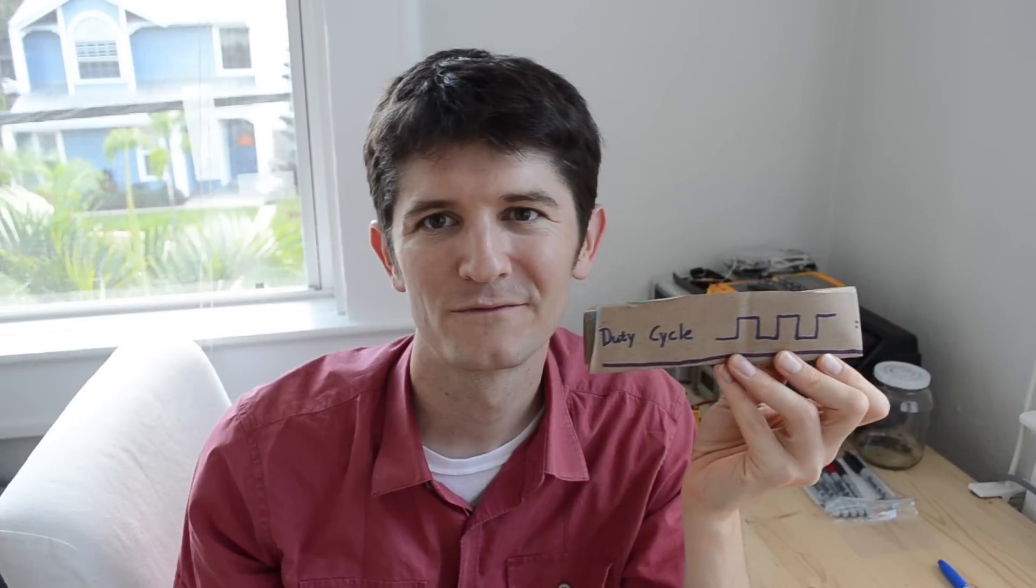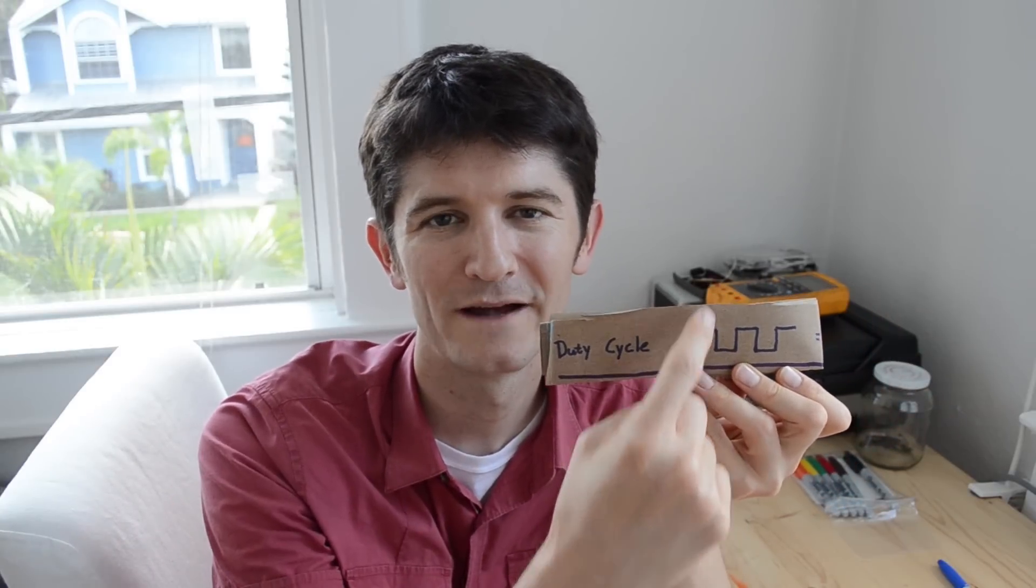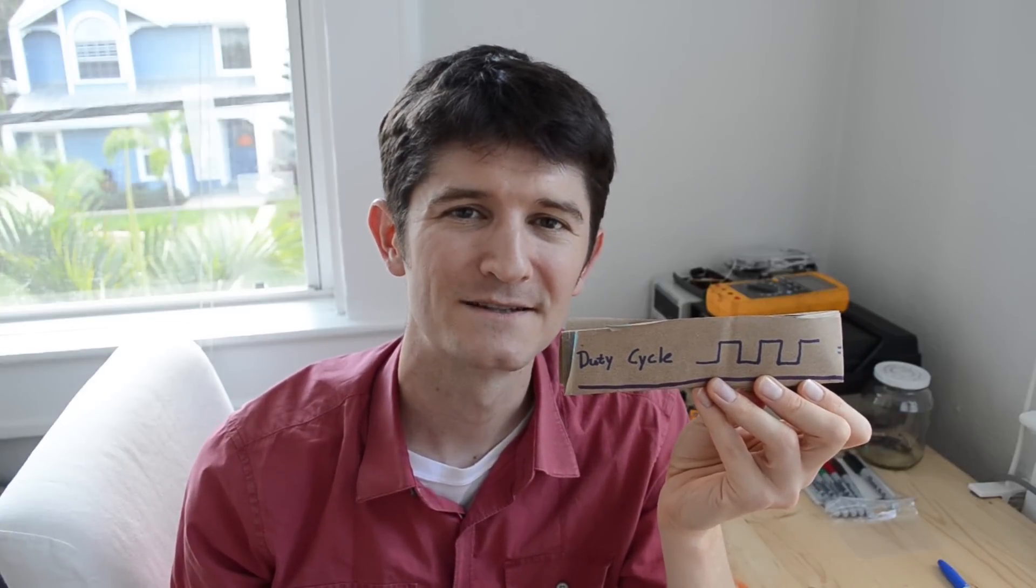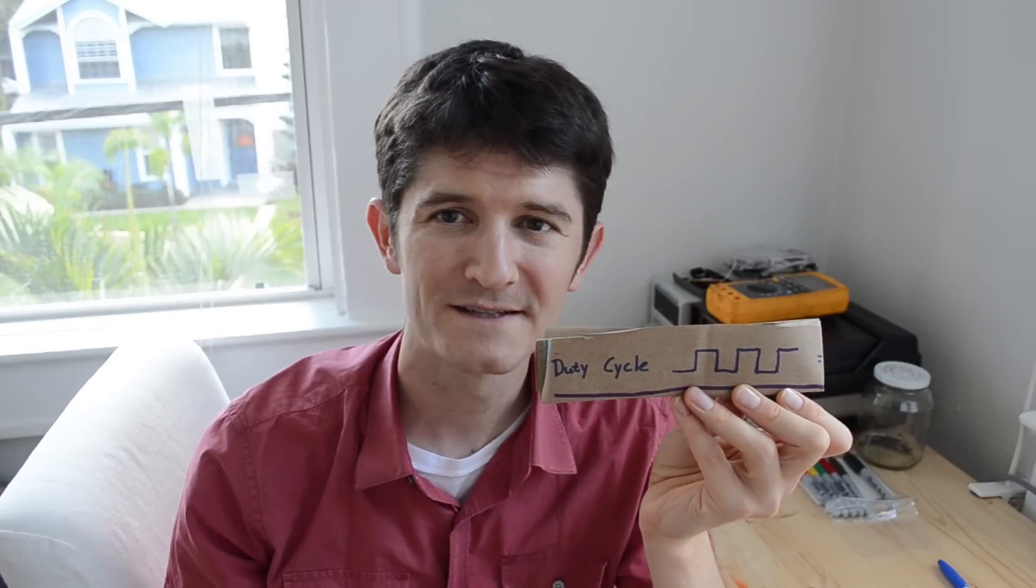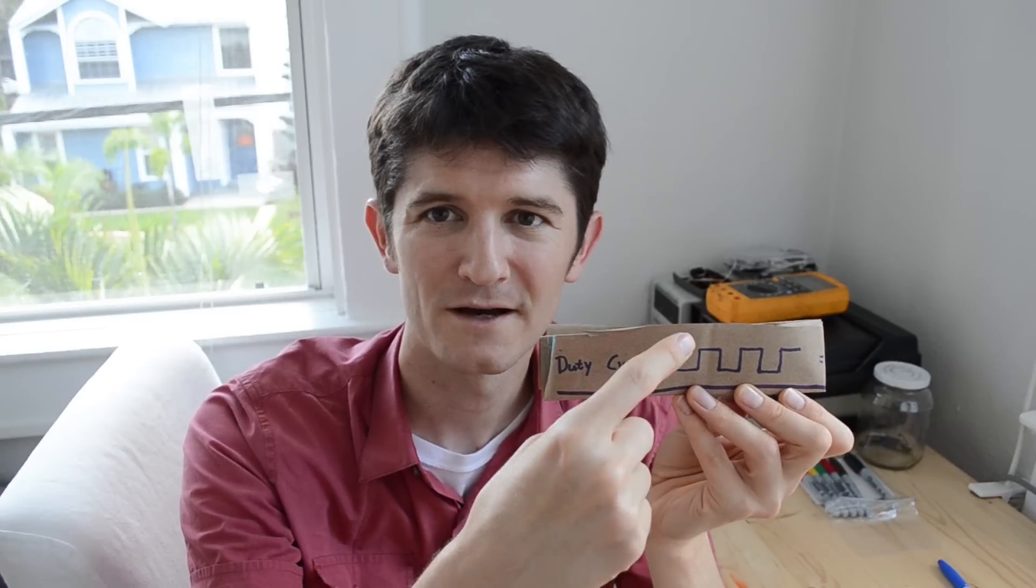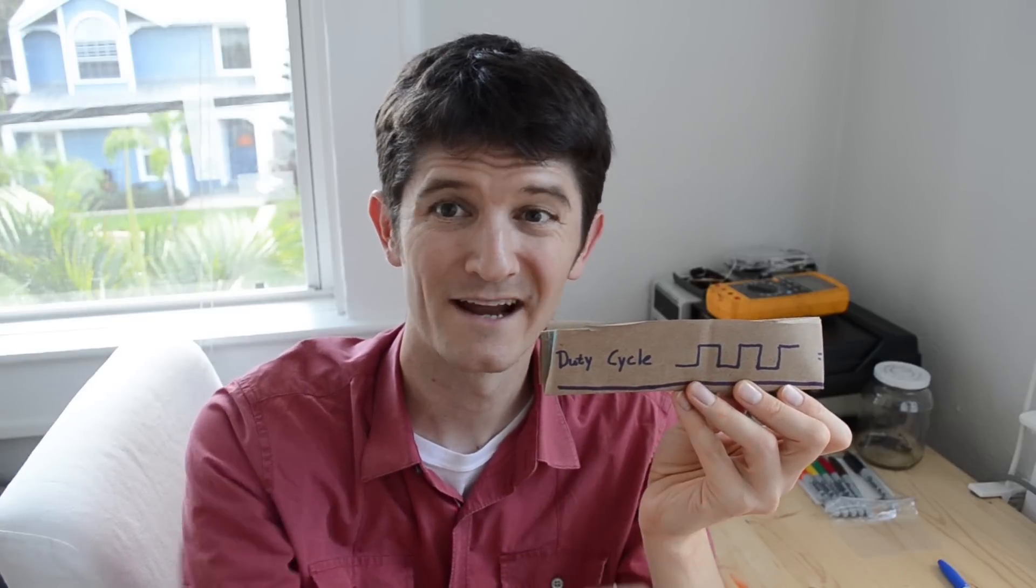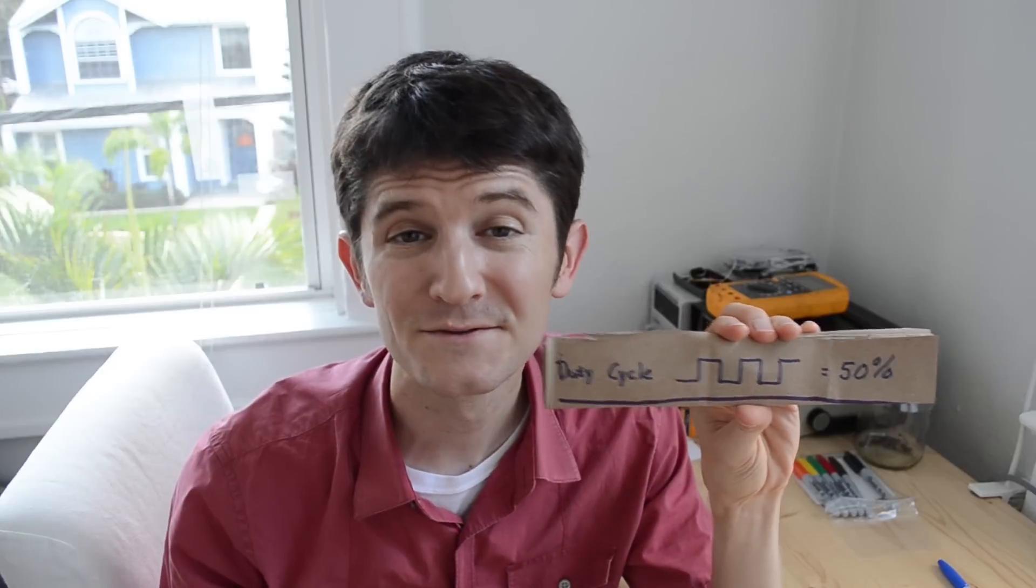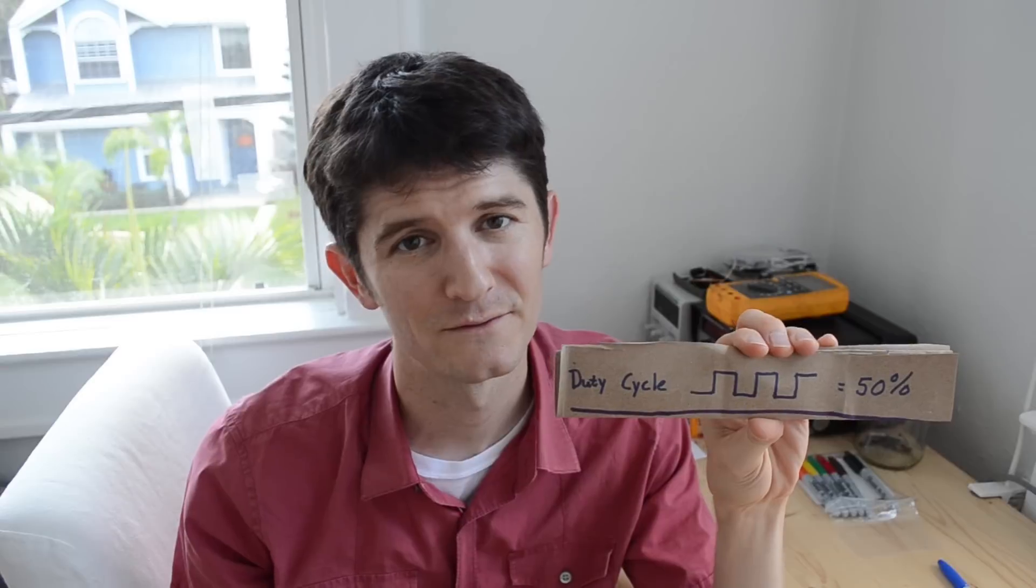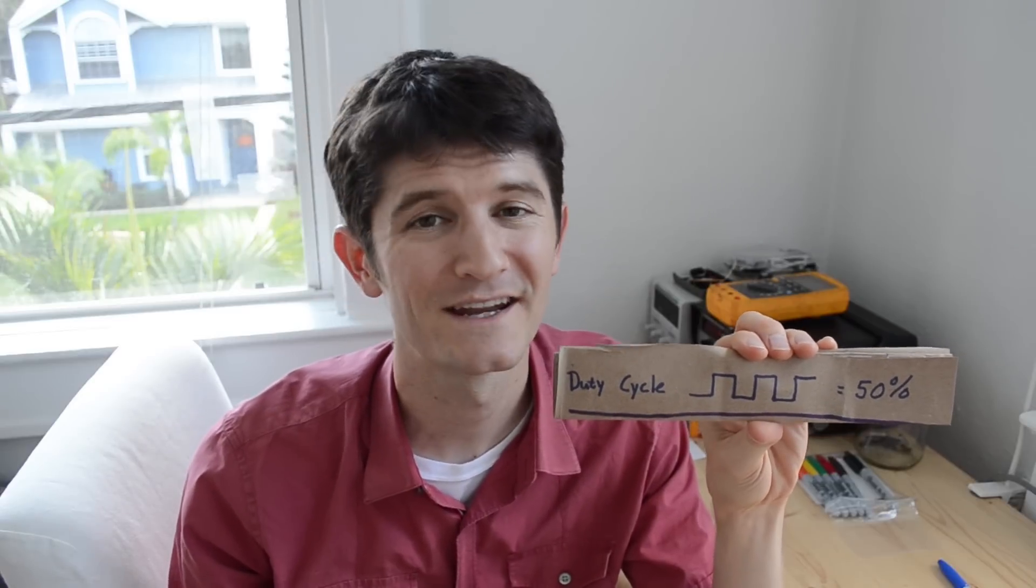Alright so here is the normal output of a 555 timer. You just got this square wave up and down up and down. When somebody talks about an output duty cycle what they're asking is what percentage of the time is the waveform up as opposed to the waveform being down. In this case the waveform is up just as long as it is down and so the duty cycle would be 50%. If this was in the up position 75% of the time then of course the duty cycle would be 75% if it was only up 25% of the time. You kind of get the idea.